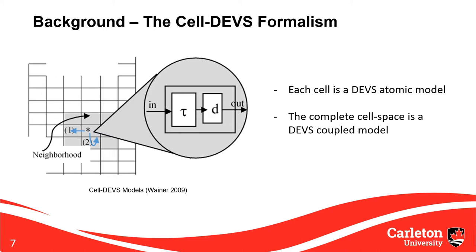Cell DEVS models have also been used to model the behavior of particles or people represented as cells. For instance, Cell DEVS has been used for modeling CO2 production and dispersion in a room, and more relevantly, it has been used to adapt the SIR model to work spatially and study factors of viral spread.